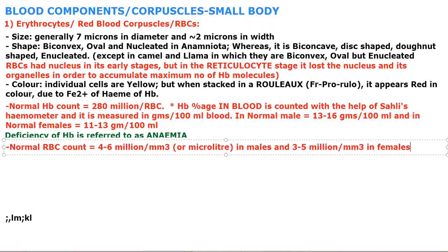A student asks if the female count can be less than 4.5. The teacher explains: in females, the count is generally 10 to 20 percent less. Another student asks if high hemoglobin indicates any disease. The teacher says having excess hemoglobin is not really a disease and it rarely happens, since RBCs are already full. If your count is higher — like a blood test showing 14.8 against a range of 11 to 14.3 — it means your RBC count is more, which is a minor issue.